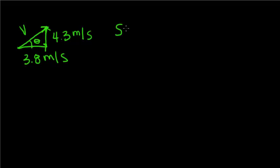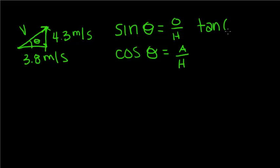Now, we have an equation sine of theta equals opposite over hypotenuse. Cosine of theta is equal to adjacent over hypotenuse, and tangent of theta is equal to opposite over adjacent.